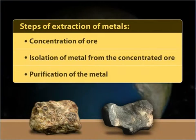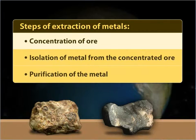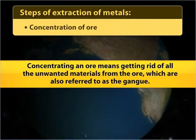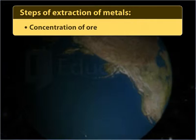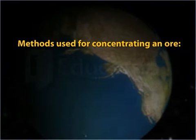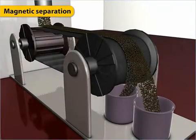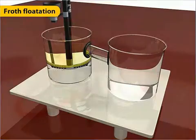In this module, you will learn in detail about the first step of metallurgy — the concentration of ore. Concentrating an ore means getting rid of all the unwanted materials from the ore, which are also referred to as the gangue. Depending on the properties of the ore and its gangue, the methods used for concentrating an ore may include hydraulic washing, magnetic separation, froth flotation, and leaching.